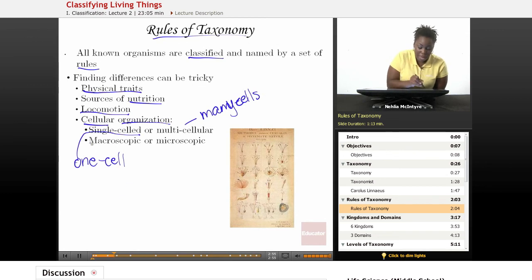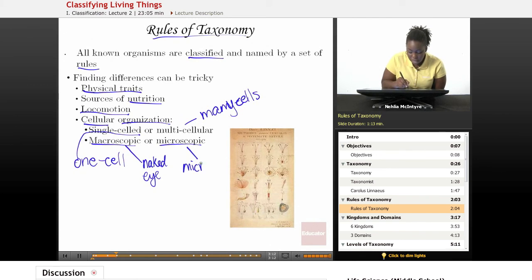Also, are these organisms macroscopic or microscopic? Macroscopic means you can see them with the naked eye—you do not need an instrument or a tool. However, microscopic organisms require something like a microscope or some type of tool to help you see them.